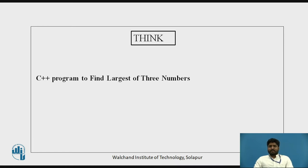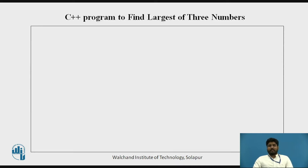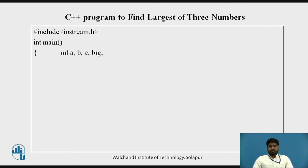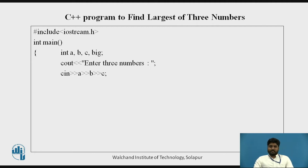The program to find the largest of three numbers is similar to finding the largest of two numbers, but we take one extra variable. We use variables a, b, c, and big. The user enters three numbers, stored in a, b, and c.